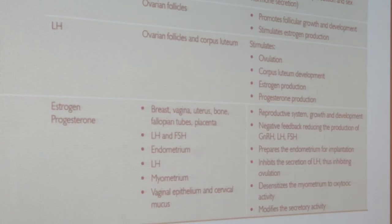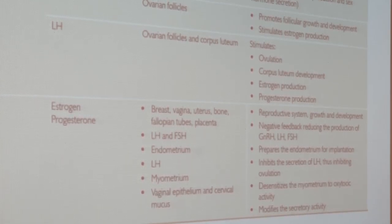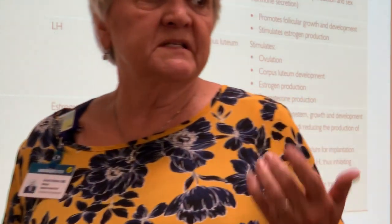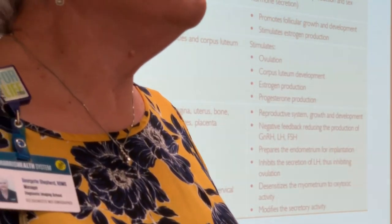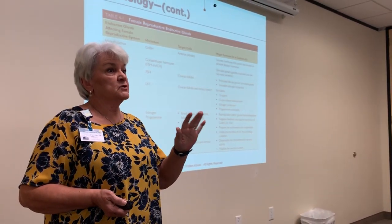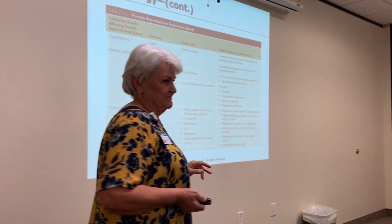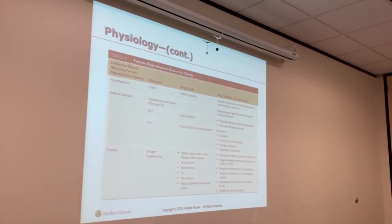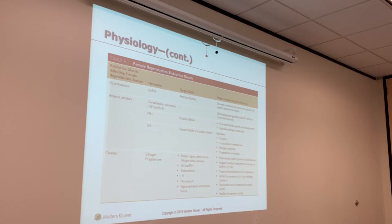Estrogen and progesterone target the breast, vagina, uterus, bone, fallopian tubes, and placenta. During premenstrual periods, breasts get firm and sore, and there is a white milky discharge from the vagina. That white milky discharge indicates fertility — historically and still today, women used this as a form of birth control by avoiding intercourse when that discharge is present.